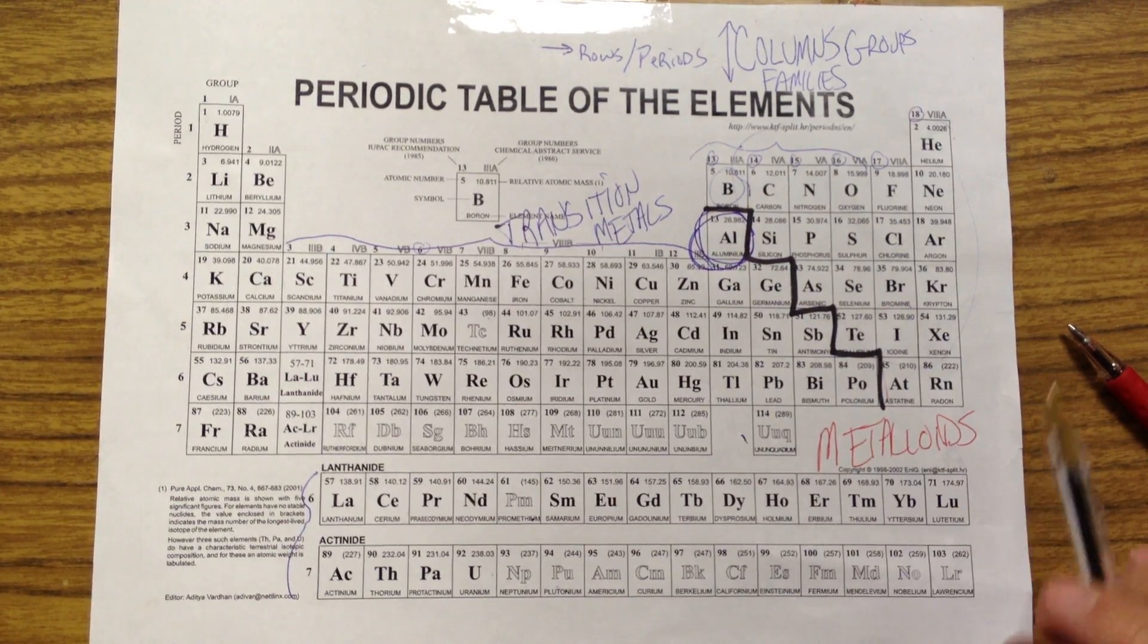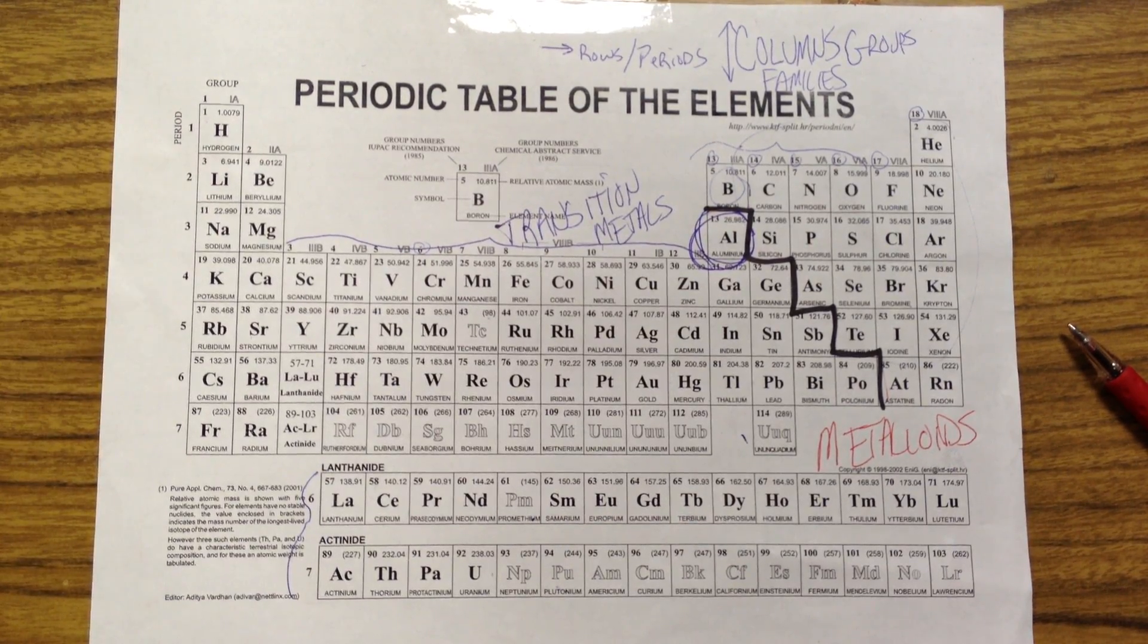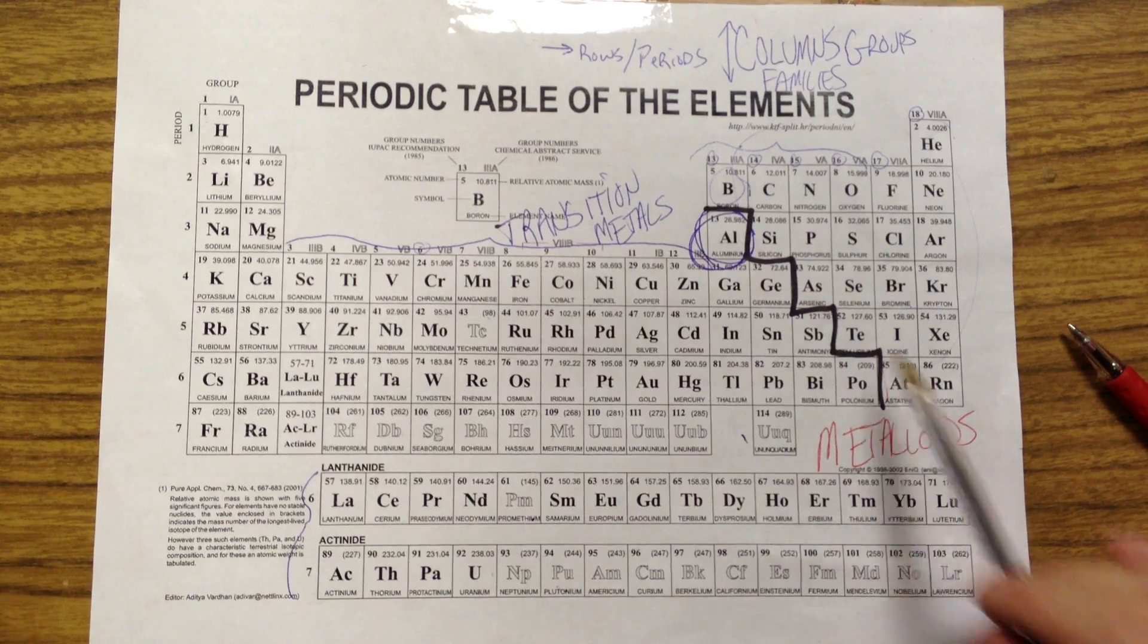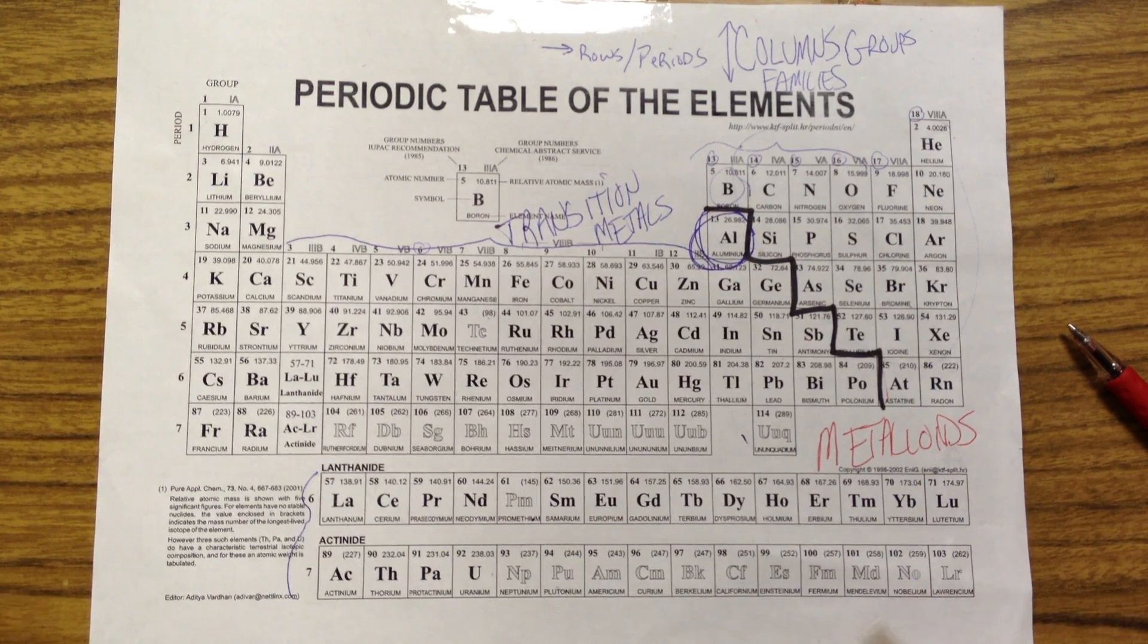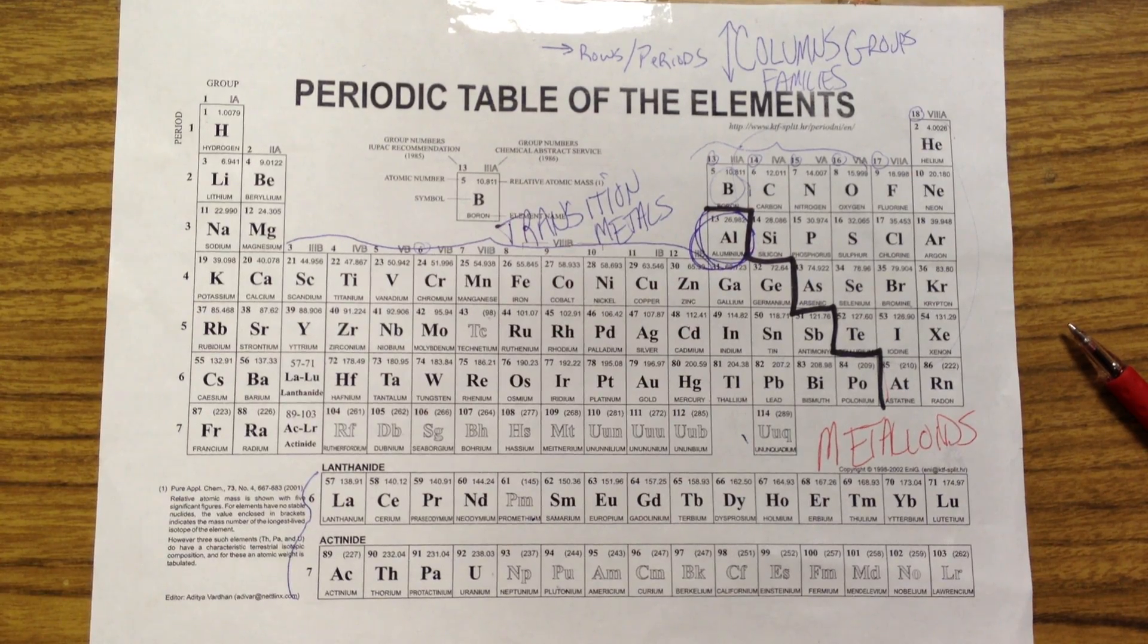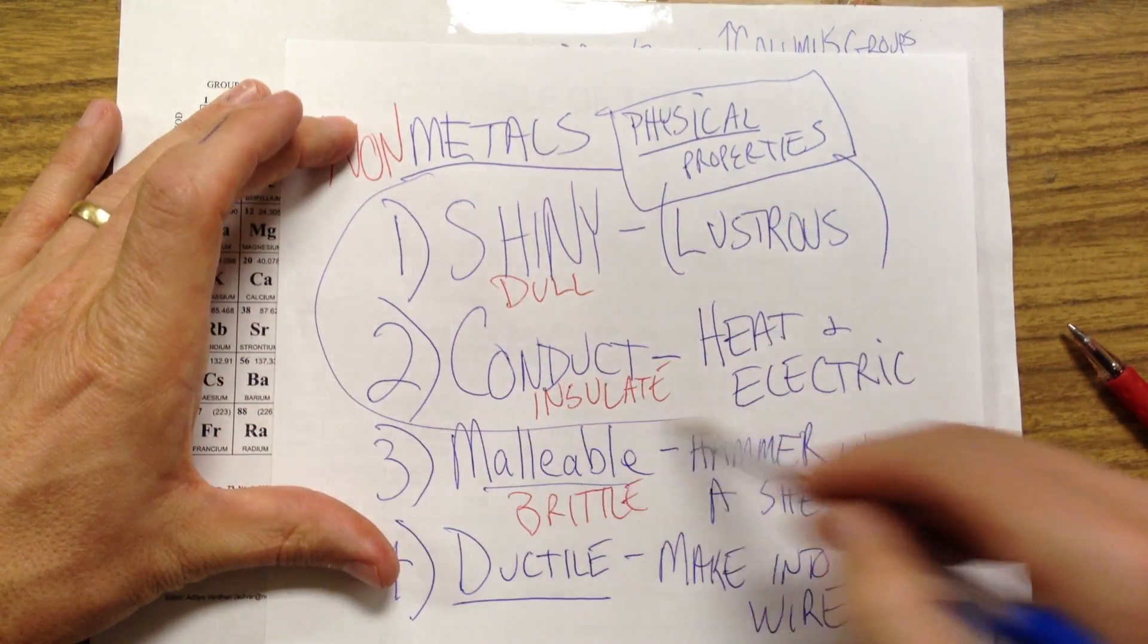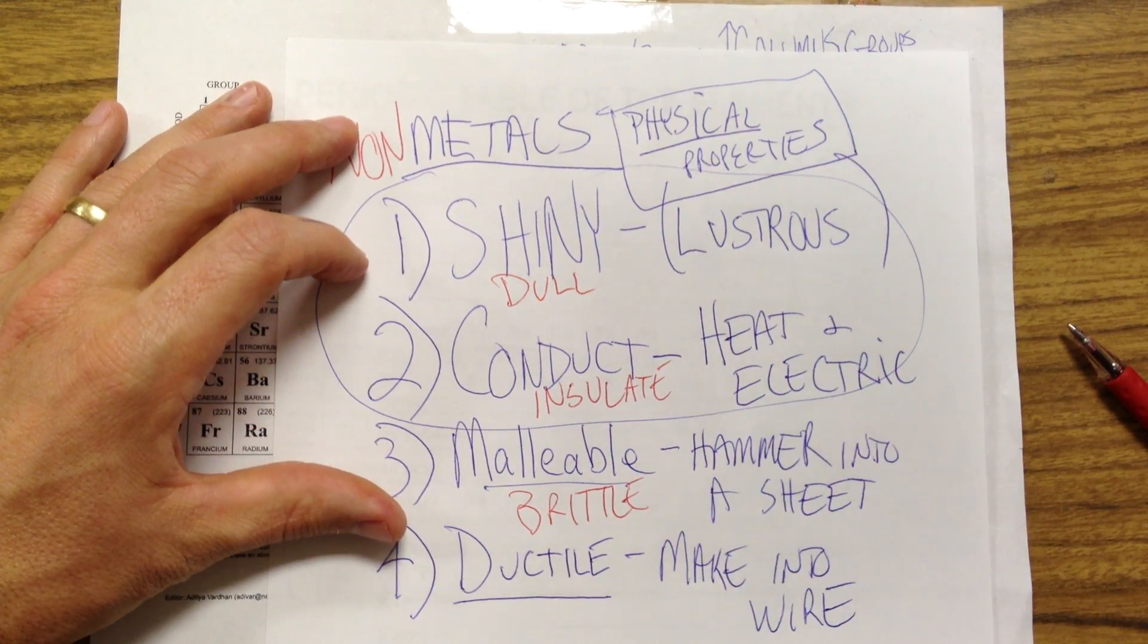And so one of the things that you can do on a test is you can be asked to classify something as a metal, non-metal, or metalloid based on where it is on the table. Or by property: if I told you that something was shiny and lustrous—or wait, that's the same word twice. If I told you it was shiny and conducted, and gave you a multiple choice, you would choose the one that was a metal.